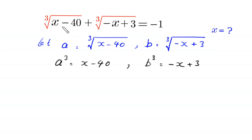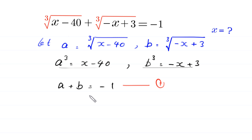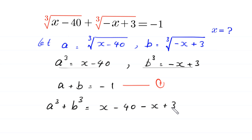We substitute a and b in the original equation, then this becomes a plus b is equal to negative 1 — let's call this equation 1. If we add the two cubed equations, a cubed plus b cubed is equal to x minus 40 minus x plus 3. The x terms cancel and we get a cubed plus b cubed is equal to negative 37.